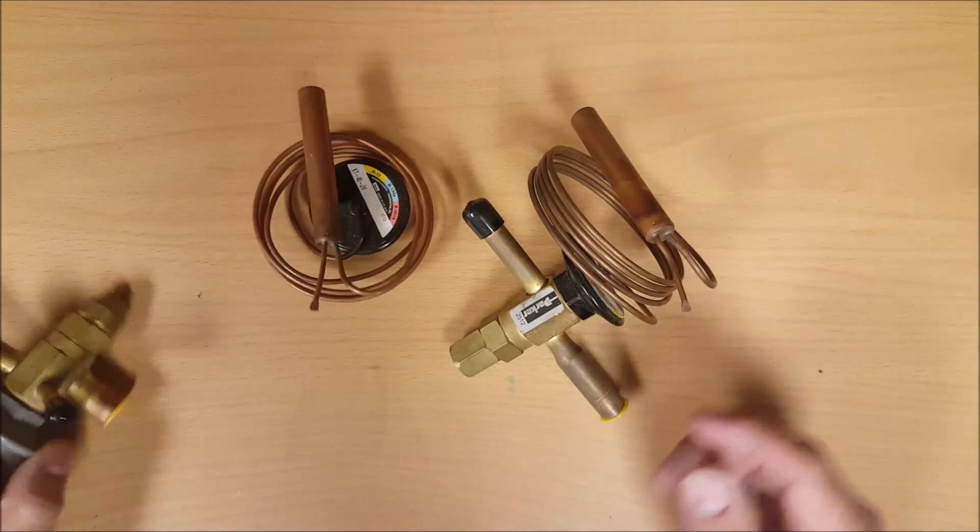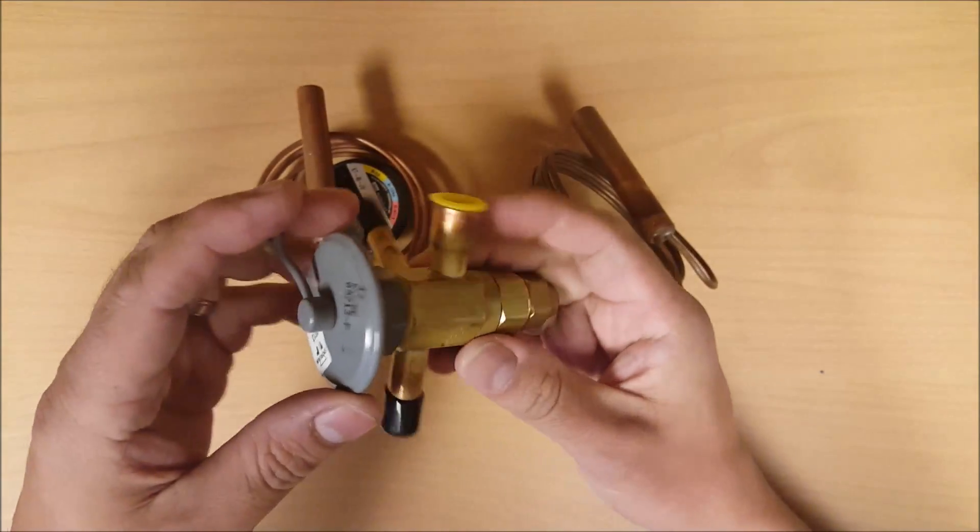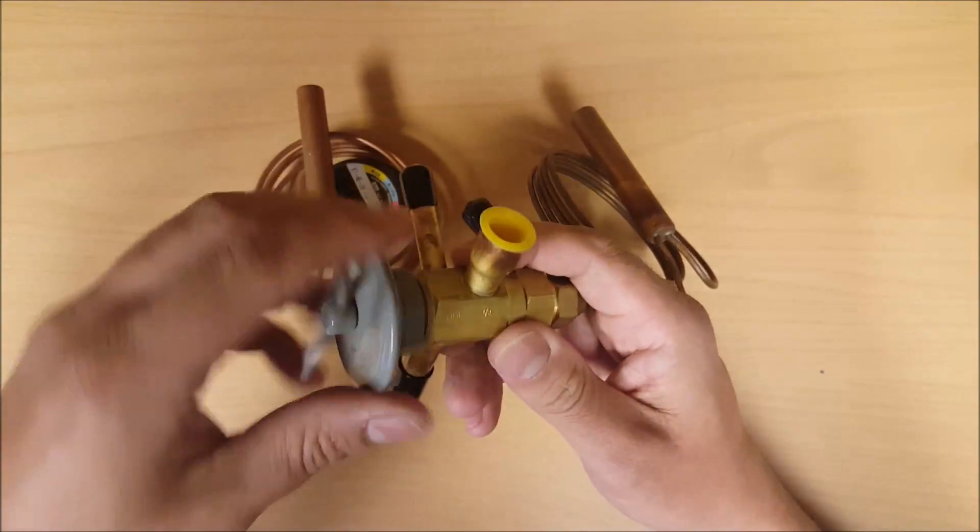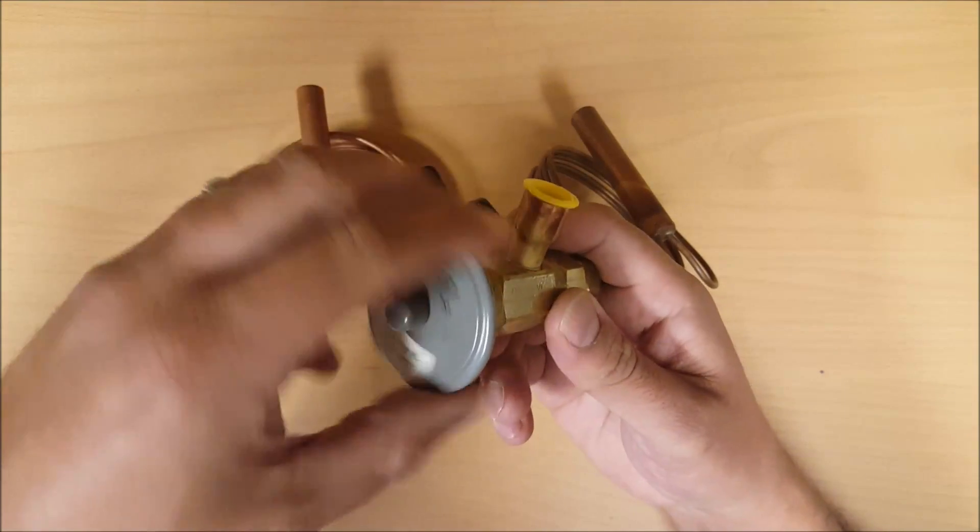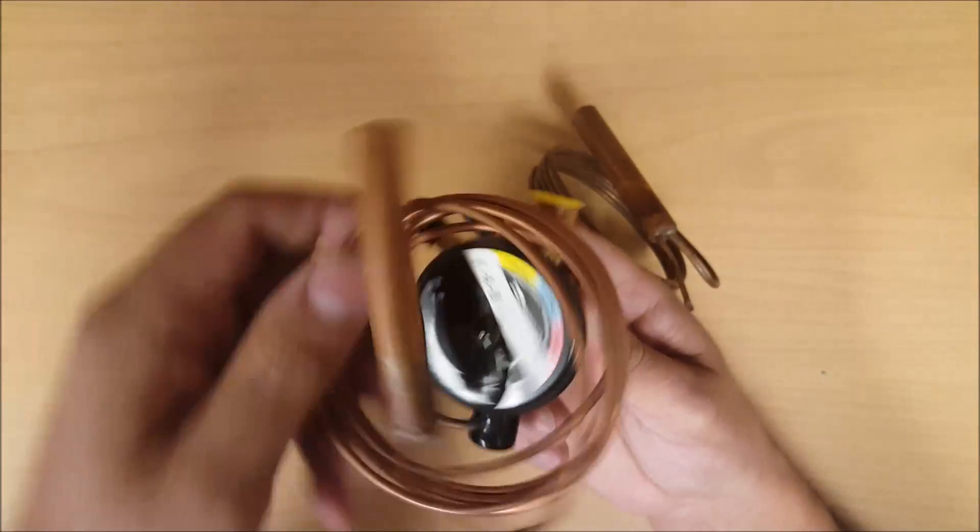Alright, next we're going to be looking at our expansion valves. Basically here's a sample expansion valve that we have. This one has a removable power element. These power elements can be swapped out. You can take this one off and pop a new one on. The reason you would want to do that is if you're changing refrigerant types.